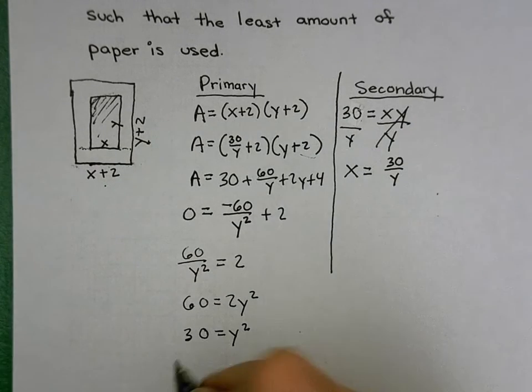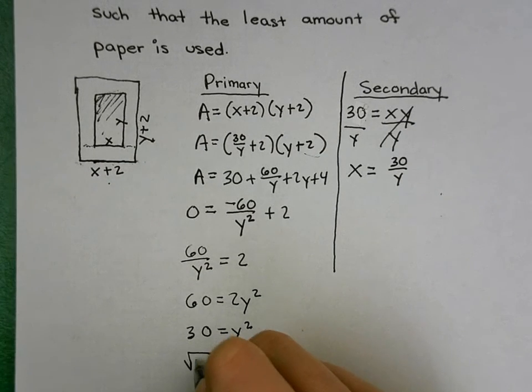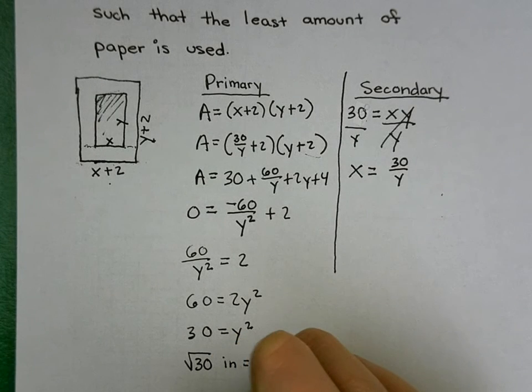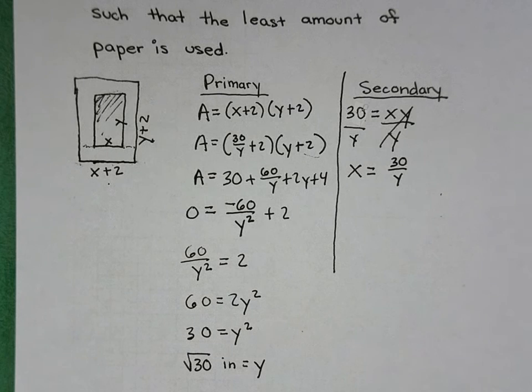The square root of 30 is root 30. And in this case, my units are inches.